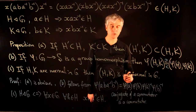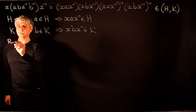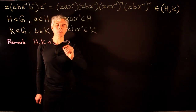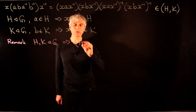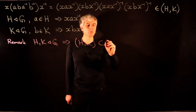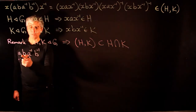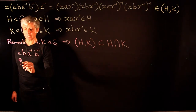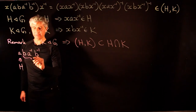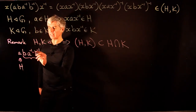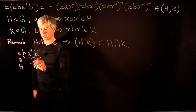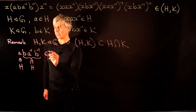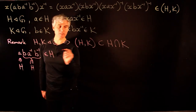We point out that if H and K are normal in G, then the mutual commutator [H, K] actually sits inside the intersection of H and K. Any commutator ABA⁻¹B⁻¹ with A in H is a conjugate of an element from H, and since H is normal this conjugate is also in H. Symmetrically, the commutator is also in K. Thus [H, K] is contained in H ∩ K.